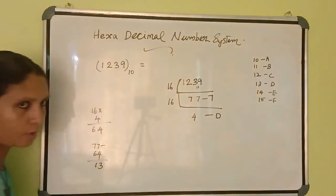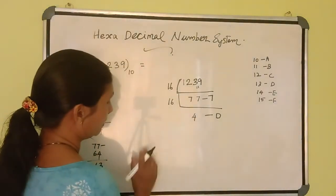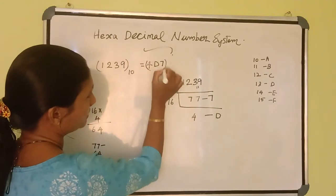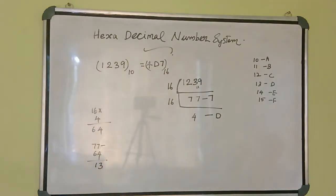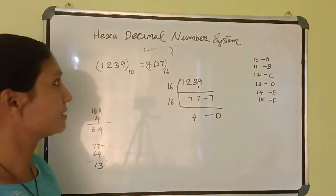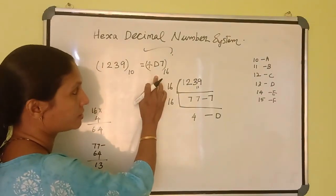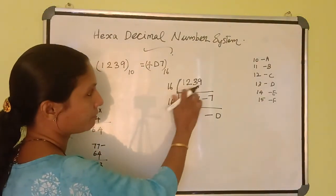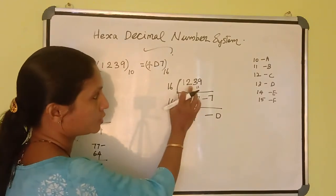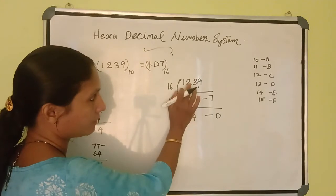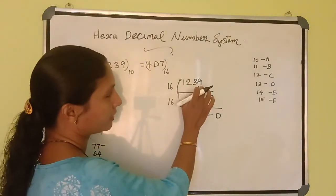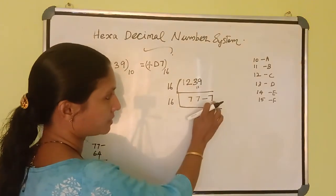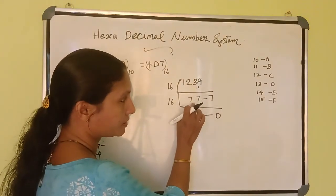Then, at last, this is a small number, so we can stop here. The equivalent answer, reading from bottom to top, we can write 4D7. This is the equivalent hexadecimal number of the decimal number 1239. How do you do this? You divide the number by 16, write the quotient, and write the remainder. 16 into 7 gives 112, then 11 is the remainder. Again you get 119, 7 times it goes, and 7 is the remainder. Quotient goes here and remainder goes here.